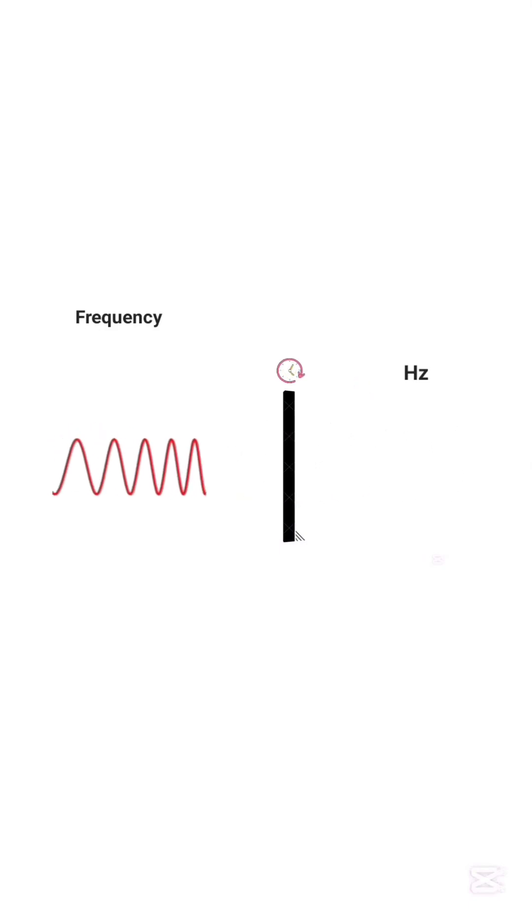The frequency of this wave is 5 hertz because it completes 5 oscillations or wave cycles in one second. Frequency and wavelength have an inverse relationship. The longer the wavelength, the lower the frequency.